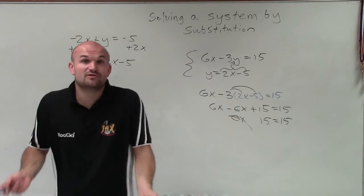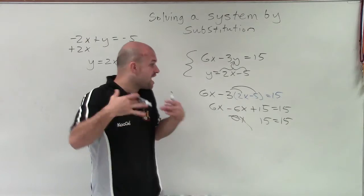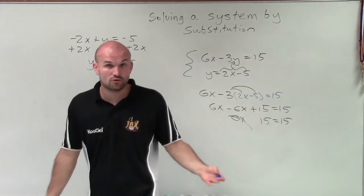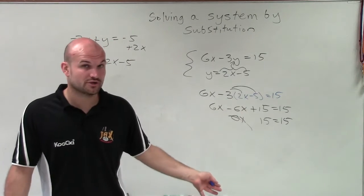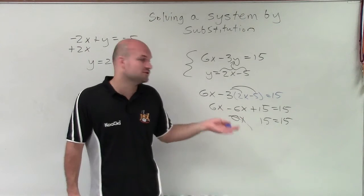Now, I don't have a value of x, right? So I can't say that x equals this value. However, my final equation says 15 equals 15, which is true, which is always going to be true. And therefore, what this means is we have infinite many solutions.